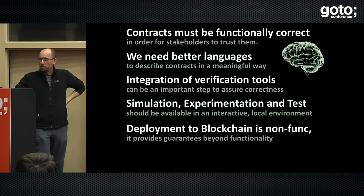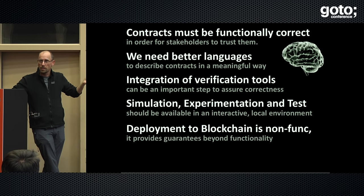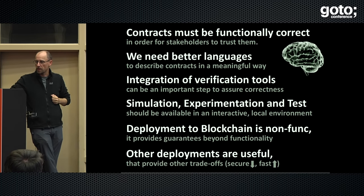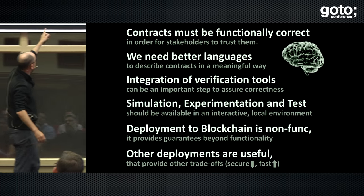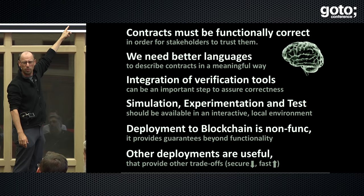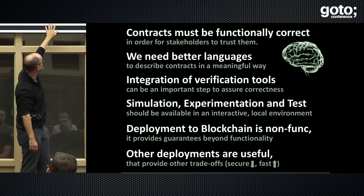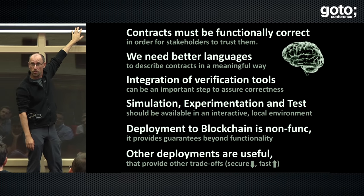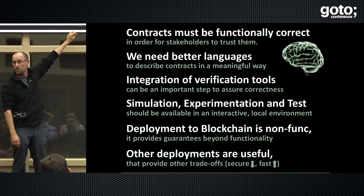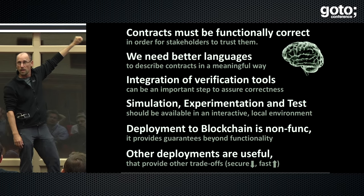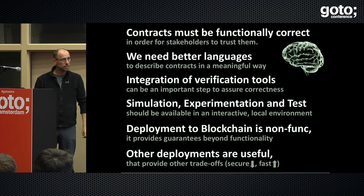Deployment to blockchains gives you non-functional properties for your functionally correct contract, and other deployments are also useful — for example deployments that give a little bit reduced security but higher throughput. One particular example could be things like lightning networks on Ethereum where you don't commit everything to the global blockchain in real time, but on the other hand you don't have every transaction cost an arm and a leg and take forever. I have no idea about the time but I'm done.